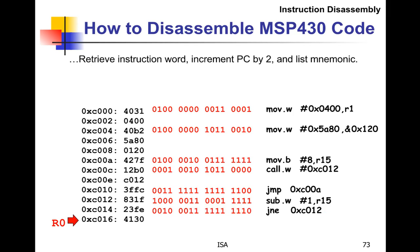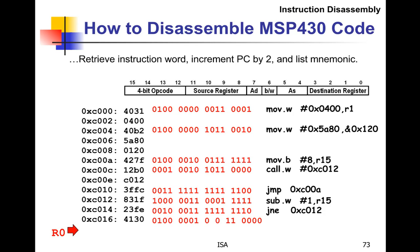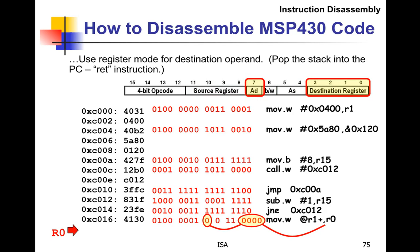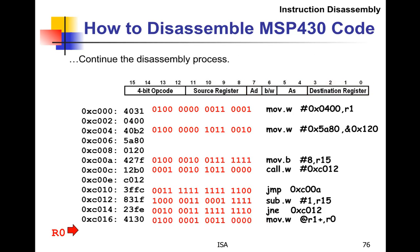There's one more instruction to disassemble. We grab it — it's a move — and advance the PC. It's a .W with addressing mode bits of 1 and 1 1, which is indirect indexed. The destination is R0. And with that, we're done — at least down to the end of where we have code.